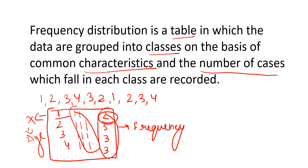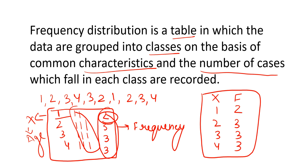This entire table is our frequency distribution — where we are representing only these two variables: x representing ages, and frequency, that is 2, 3, 3, 3. So this is my frequency distribution. In common characteristics we create classes, and we record individual frequencies showing how many observations fall in each particular category.